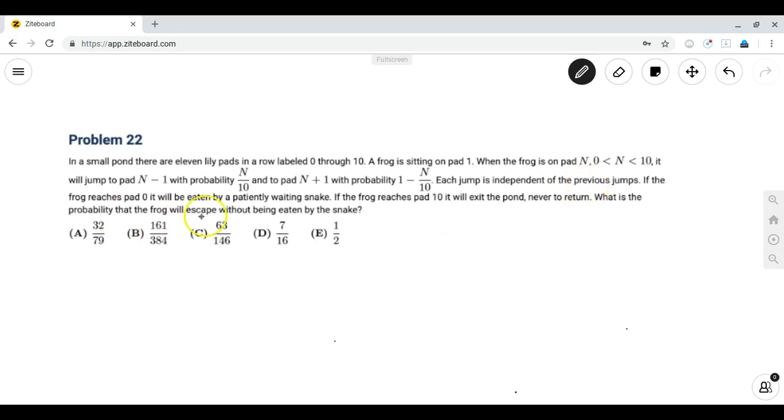If the frog reaches pad 0 it will be eaten and if it reaches pad 10 it will exit the pond. So we want the probability that the frog will exit the pond.